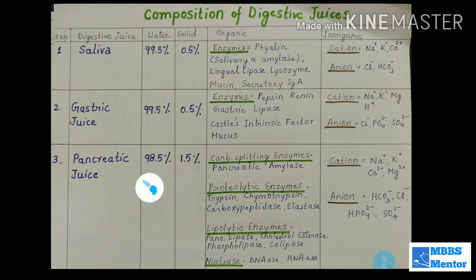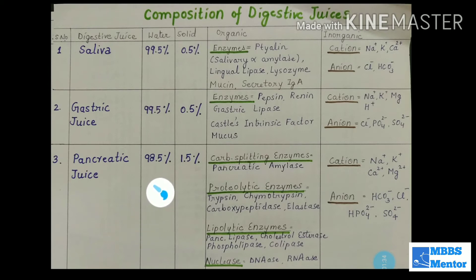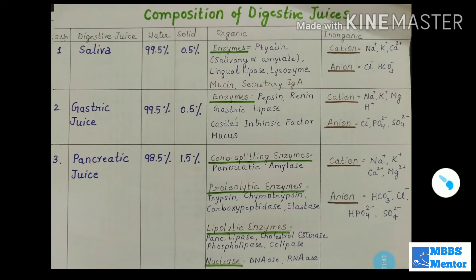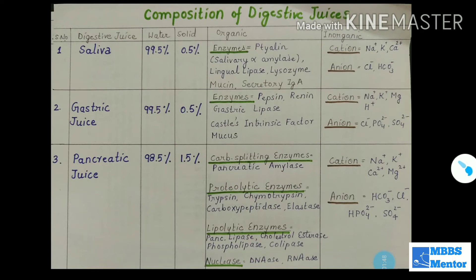Now, pancreatic juice. It is secreted by the pancreas and is composed of 98.5% water and 1.5% solids. There are many enzymes, so we will classify them. Number one: carbohydrate-splitting enzymes, which include pancreatic amylase. Pancreatic amylase acts on starch — it is called pancreatic amylase because it is present in pancreatic juice.